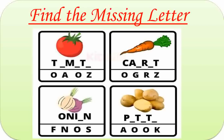First one is Tomato. Missing letters are O, A and O. That is T-O-M-A-T-O. Tomato. Second one is Carrot. Missing letters are R and O. C-A-R-R-O-T. Carrot. Third one is Onion. Missing letter is O. O-N-I-O-N. Onion. Fourth one is Potato. Missing letters are O, O, O and A. Word is P-O-T-A-T-O. Potato.